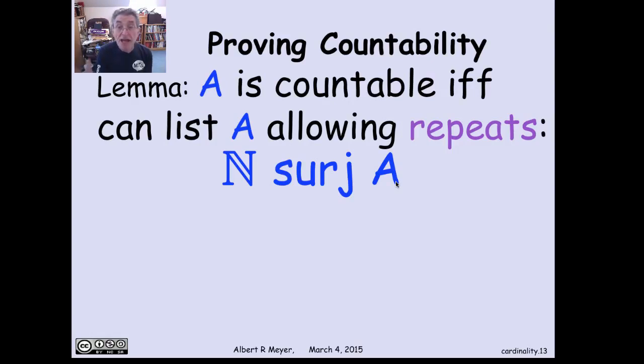Map every other non-negative integer, say, to the 10th element or last element of A. So there's certainly a surjection if A is finite. Now suppose that A is infinite and I have a surjection from the non-negative integers to A. So I'm listing A with repeats, and I'm supposed to have a bijection if it matches the other definition. How do you do that?